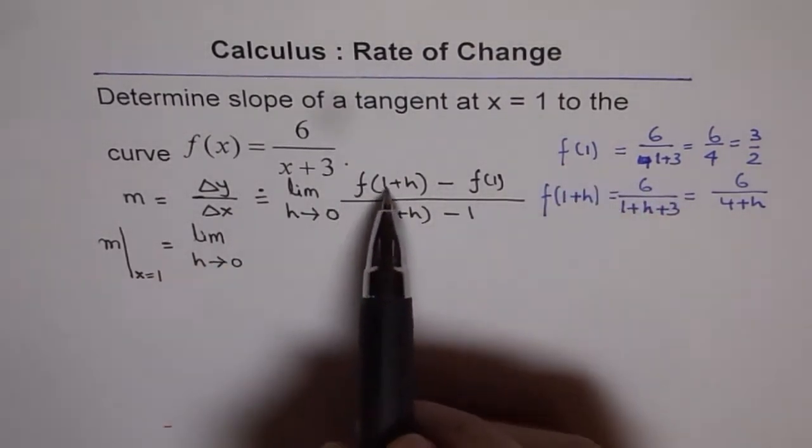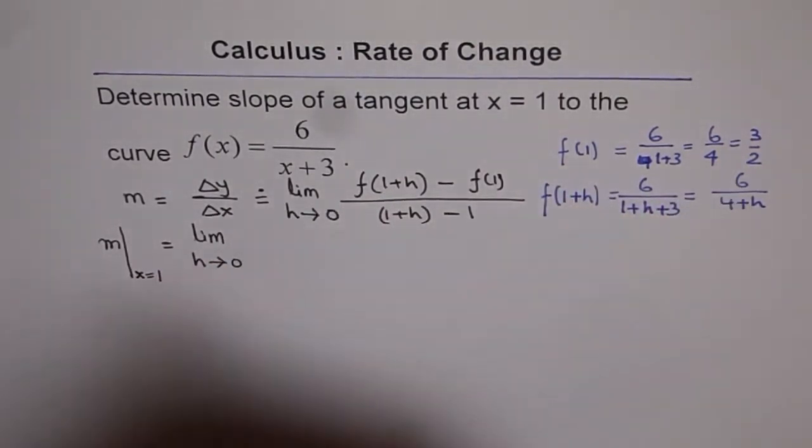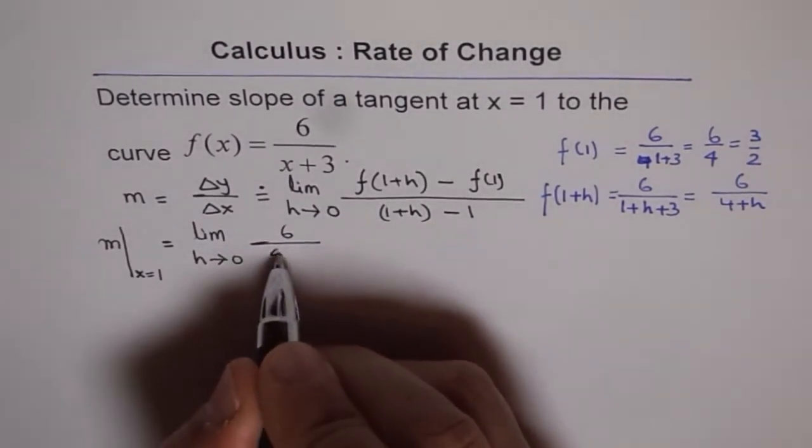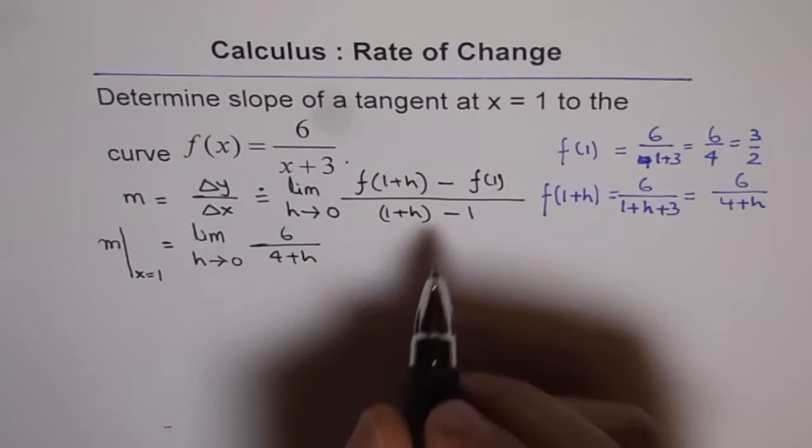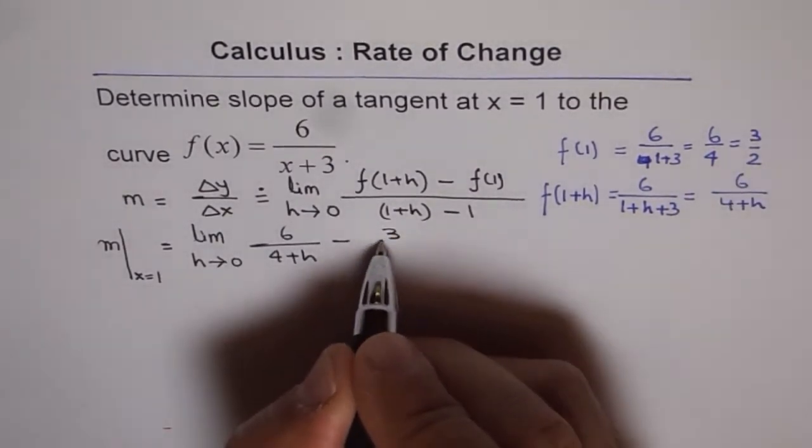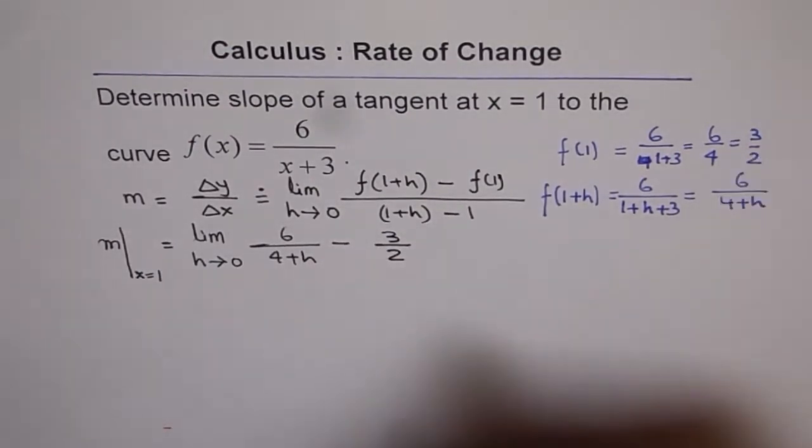And then the values, f(1+h) is 6/(4+h) minus 3/2.